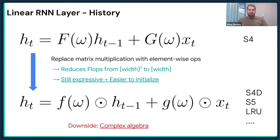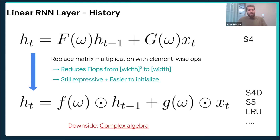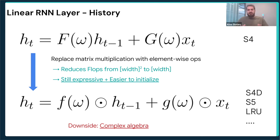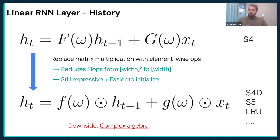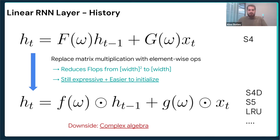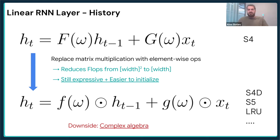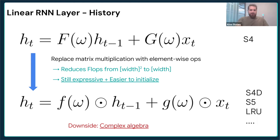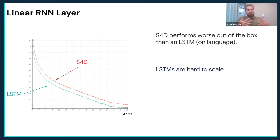The only drawback of diagonalization is that the diagonals must be complex numbers, making the recurrence complex and requiring complex algebra, which can sometimes be a little bit slower. However, on language specifically, we find that using complex numbers is not necessary — we can get away with just real diagonal numbers.